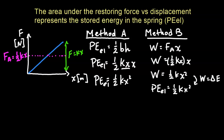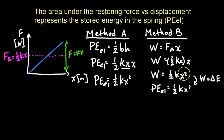Our second method uses the work equation: force times displacement. If you pull on the spring, because the force increases linearly with displacement, we use the average force to calculate the work done. The average force is one-half kx, since the force is kx. So work equals one-half kx times x, giving one-half kx squared. Since work equals a change in energy, the elastic potential energy — the energy stored in the spring — is equal to one-half kx squared.